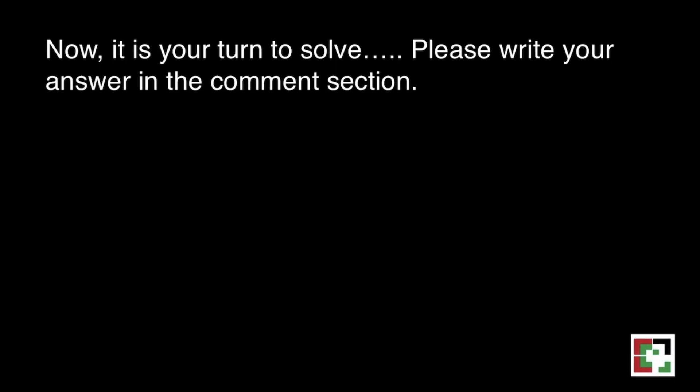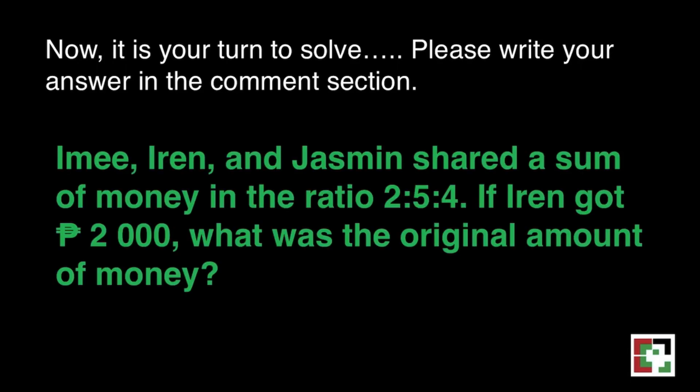Now, it is time for you to solve. Please write your answer in the comment section. The question is, Aini, Irene, and Jasmin shared a sum of money in the ratio 2 is to 5 is to 4. If Irene got 2,000 pesos, what was the original amount of money? I'll be waiting for your answer.